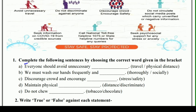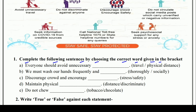So first question is: complete the following sentences by choosing the correct word given in the bracket. Aapko yaha pe bracket mein do words diye rakhe hain, inme se correct word ko choose karna hai, aur filling the blanks — ya in sentences ko aapko pura karna hai. Bahut easy hai. First is: everyone should avoid unnecessary — travel ya physical distance? Hum sab ko bina kisi zaroorat ke yeh cheez avoid karni hai — travel ya physical distance? Right answer is travel — T-R-A-V-E-L, travel. Then next is: we must wash our hands frequently and — thoroughly or socially? Toh abhi upar humne samjha tha, isme aayega answer — thoroughly.